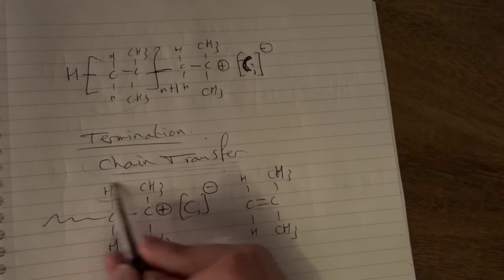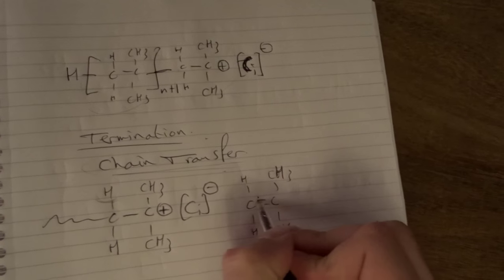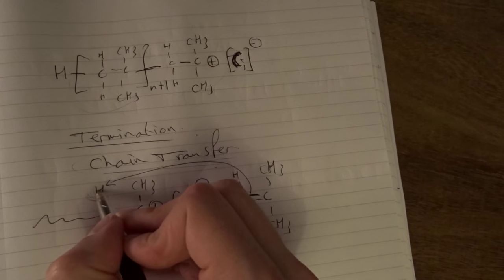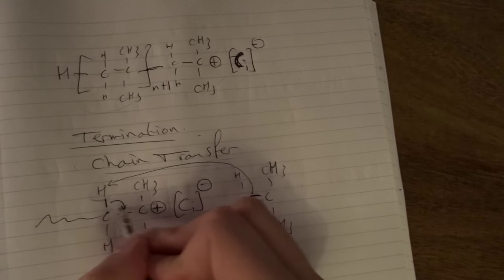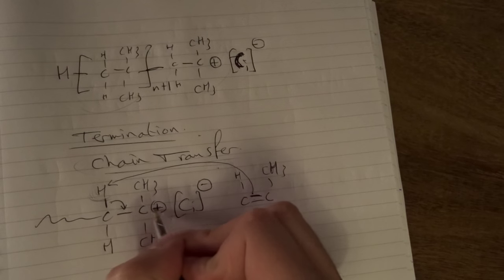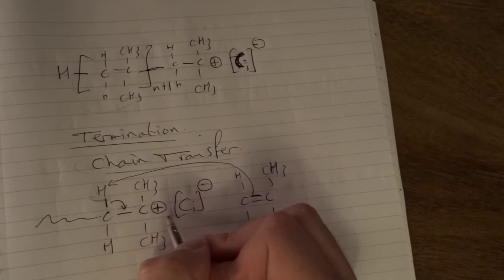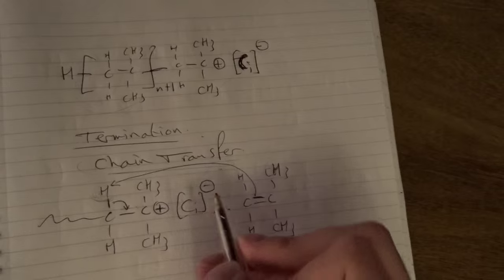But this proton here will react in the chain transfer reaction. This double bond will react with the proton here. Here we have an excess of electrons, so this bond will go here and here there will be a new bond formed. And this positive charge will be cancelled out and will be transferred to the monomer. That's why it's called chain transfer.